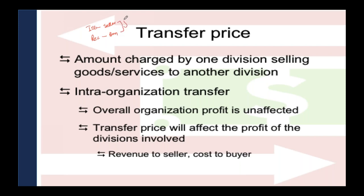Both seller and buyer belong to the same group company XYZ Limited. Seller is X company, buyer is Y company, both belonging to the same group. For the internal transfer of uniforms, what price should be charged? The managers are responsible for their segment's profitability. Therefore, there should be some revenue and some profit in the internal transfer — it has to become revenue to the seller and cost to the buyer.